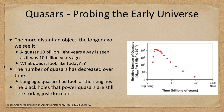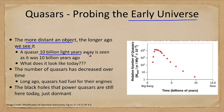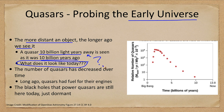What can we learn from quasars? Quasars are a way to probe the early universe. The more distant an object, the longer ago we see it — a quasar 10 billion light years away is seen not as it is today, but as it looked 10 billion years ago. We would have to wait 10 billion years for the light leaving it today to reach us.